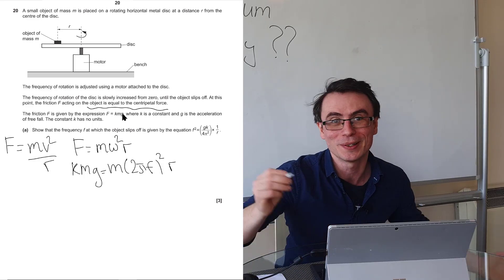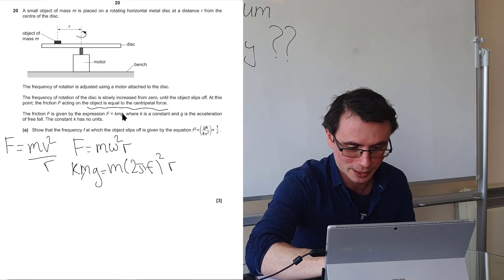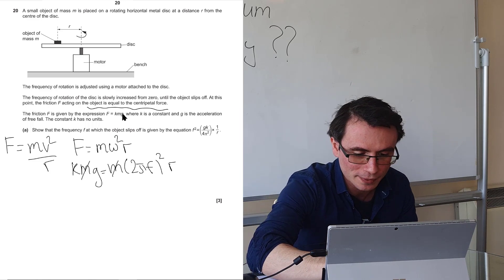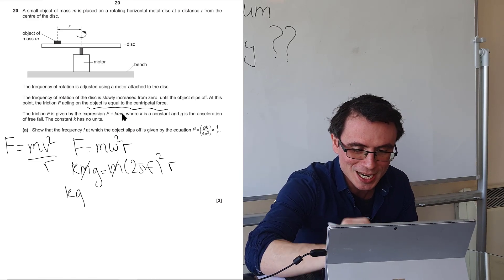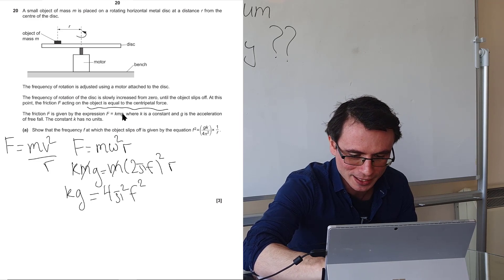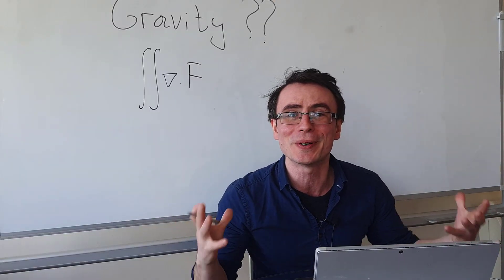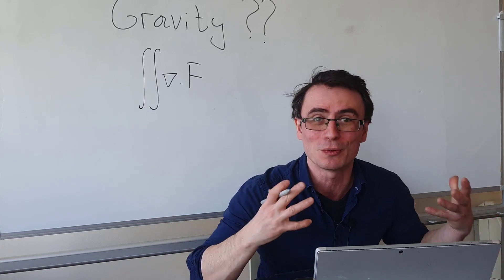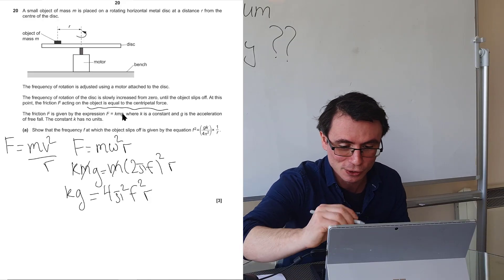Our next step will be to cancel out the m. So we can go ahead and cancel those. And what we're left with is that kg is equal to 4 pi squared f squared r. And all we need to do is our final step which will be to rearrange for f squared.